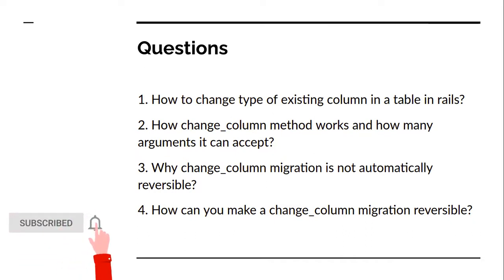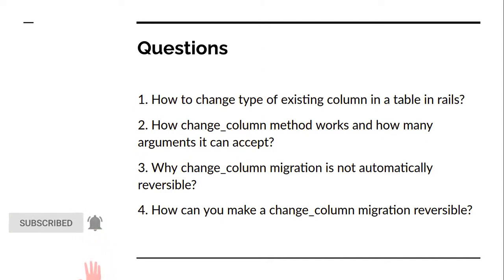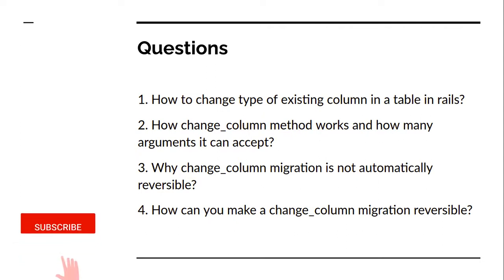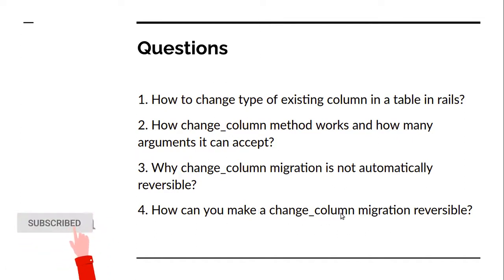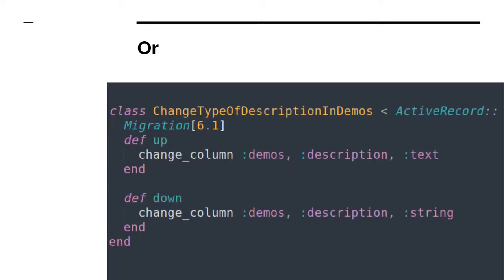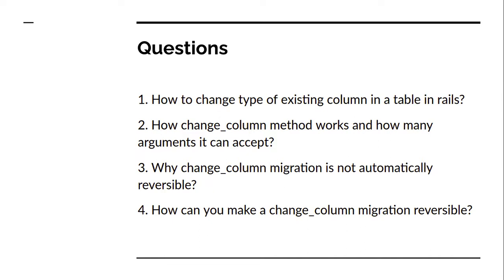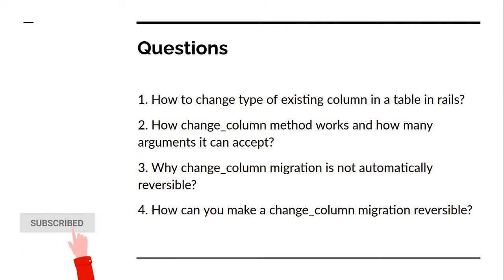Third question: why is `change_column` not automatically reversible? Because when using `def change` and rolling back, Rails cannot determine what the previous type was before the change. Fourth question: how can you make a `change_column` migration reversible? You can either use `def up` and `def down` methods, or use a `reversible` block inside `def change`. That's all from this lecture — thanks for watching, see you in the next one!